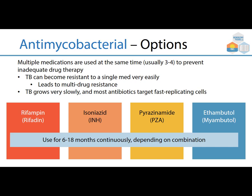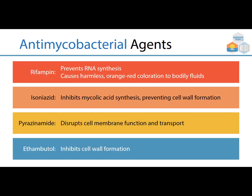A little more detail on each: rifampin prevents RNA synthesis and causes a harmless orange-red coloration to bodily fluids. Isoniazid inhibits mycolic acid synthesis, preventing cell wall formation. Pyrazinamide disrupts cell membrane function and transport. And ethambutol also inhibits cell wall formation.